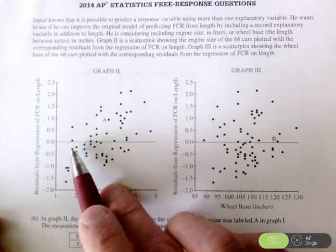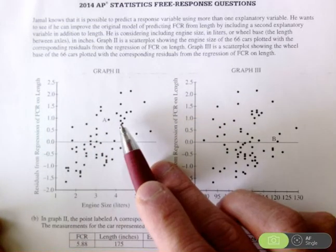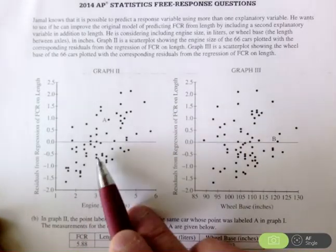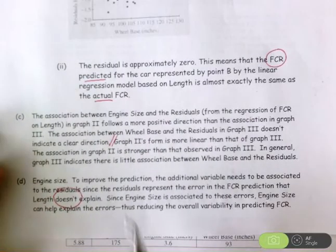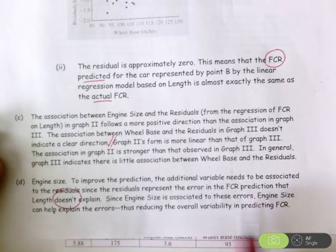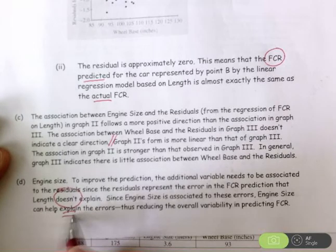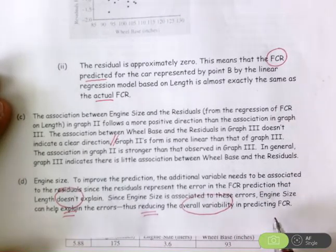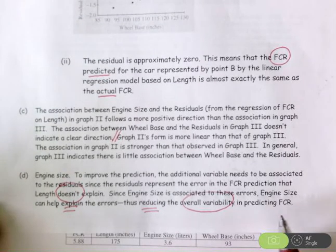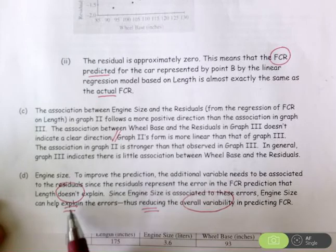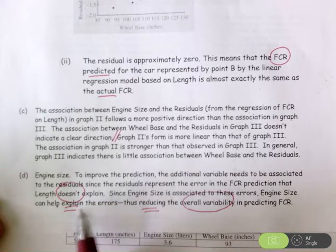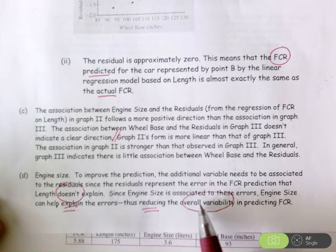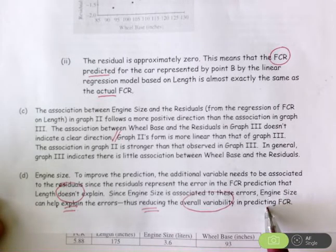Because of the direction, form, and strength of graph 2 compared to graph 3, engine size may help explain some of those errors. Since engine size is associated to these errors, it can help explain them and thus reduce the overall variability in predicting FCR. Length couldn't explain all of the variability — some remained in the residuals — but engine size, being associated to those errors in a positive linear way, can help reduce overall variability by combining both length and engine size to make a better FCR prediction.